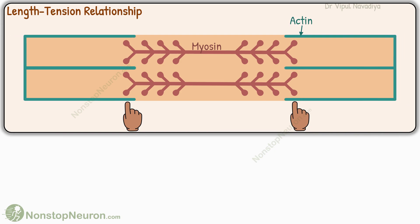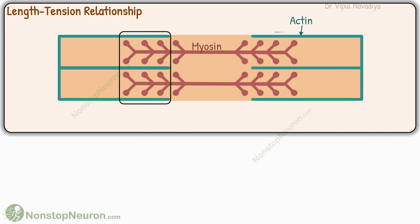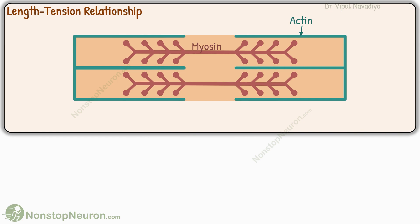If we decrease the initial length, the actin gradually starts overlapping with myosin. At this point, these many myosin heads can interact with actin, so they can generate some force. With a further decrease in the initial length, the overlapping increases, so the force also increases. With the shortening of the sarcomere, the overlapping keeps increasing and the force also increases.